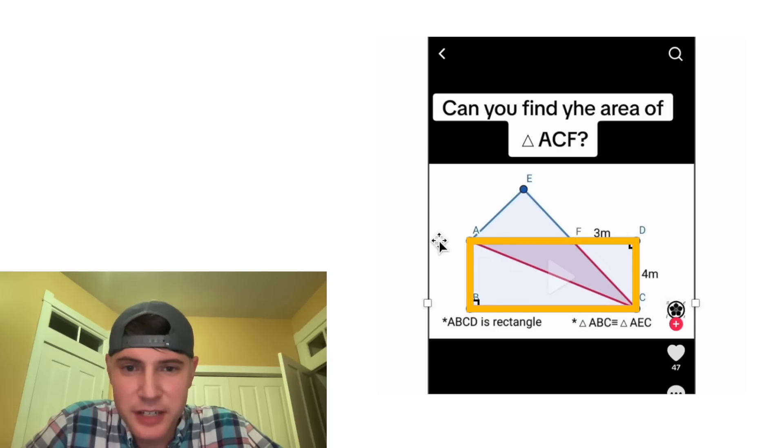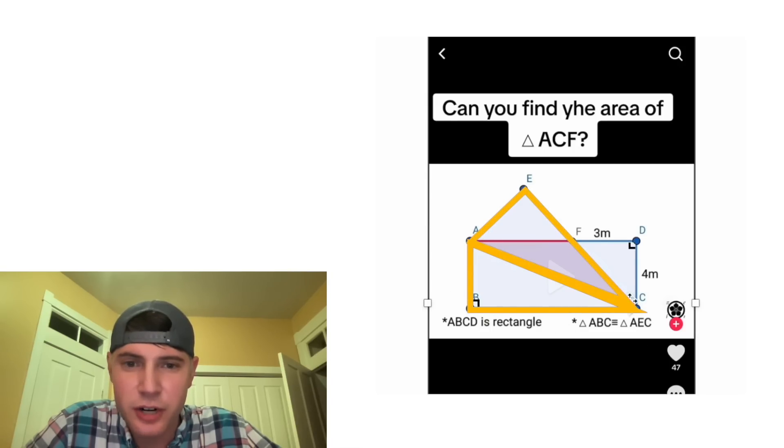We're also given that ABCD is a rectangle and that triangle ABC, which is this triangle, is congruent to triangle AEC, which is this triangle up here. So these two are congruent as well.